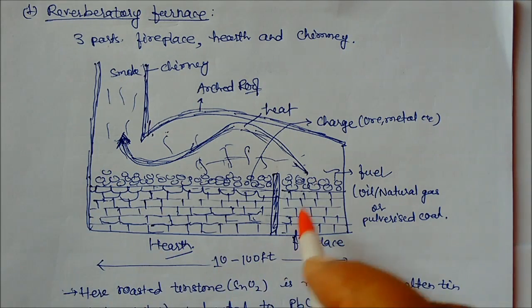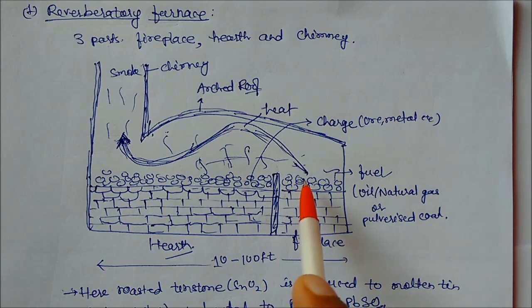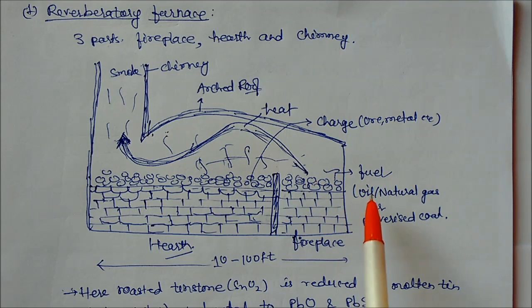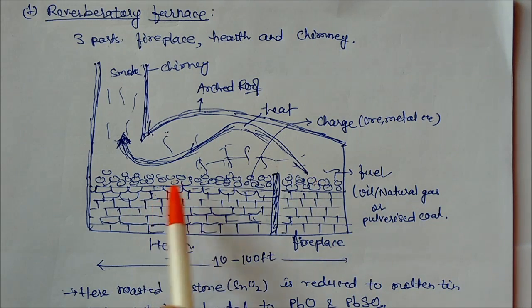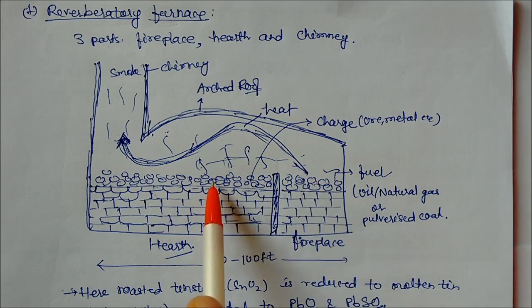So this whole furnace is divided into three parts: fireplace, hearth, and chimney. Here fuels are kept which can be oil, natural gas, or coal. This is your charge. Charge means it can be ore, metal, etcetera.